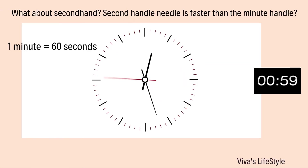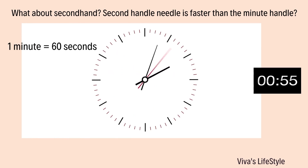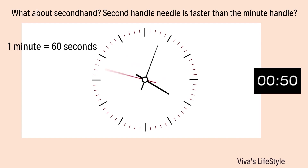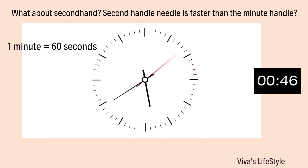What about the second hand? The second hand needle is faster than the minute hand. That's true. One minute is equal to 60 seconds. One full rotation of the second hand completes one minute.